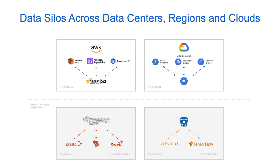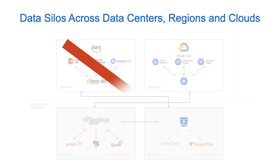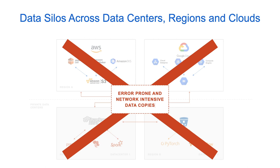Copying large amounts of data can lead to prohibitive network egress charges, and each environment may have their unique API and access control model. This solution not only slows down business agility, but is also expensive both in terms of people and infrastructure costs, as we rely on manual copy-based data synchronization across storage systems and various environments.